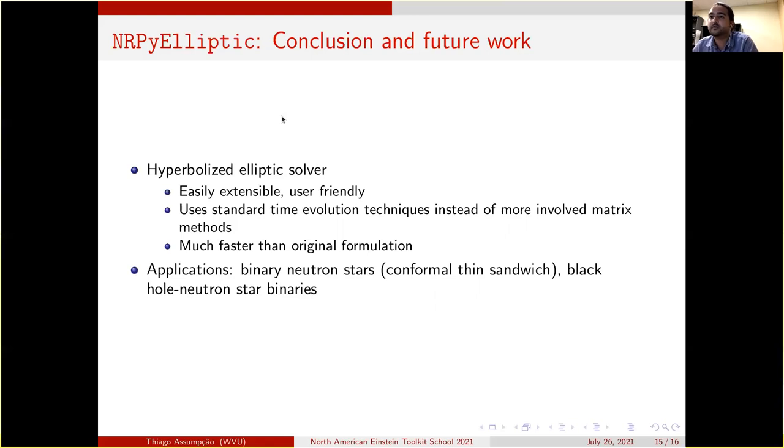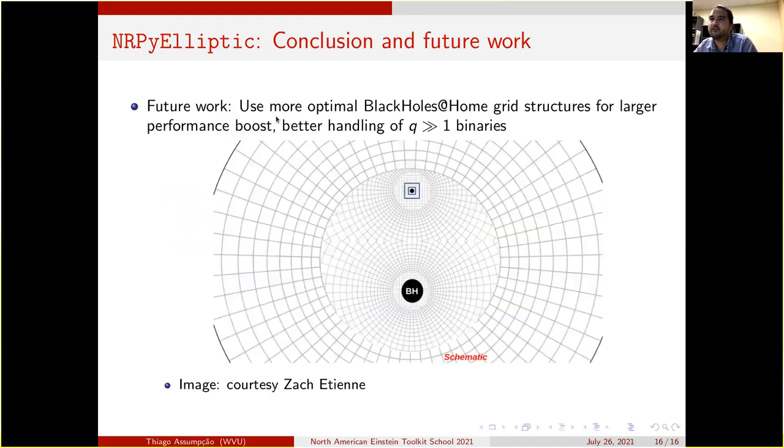Some possible applications would be binary neutron stars with a conformal thin sandwich decomposition and black hole neutron star binaries. But moving forward, we're going to be using these optimal black holes at home grid structures with different grid patches that will allow us to handle larger mass ratios to generate binaries. Thank you.